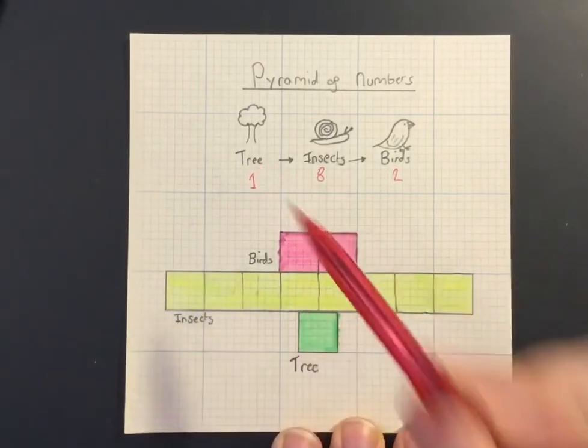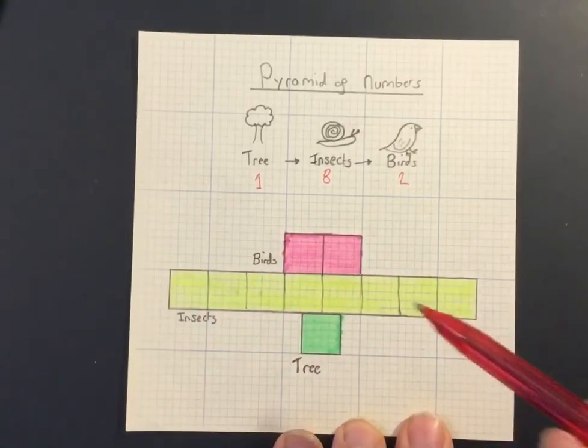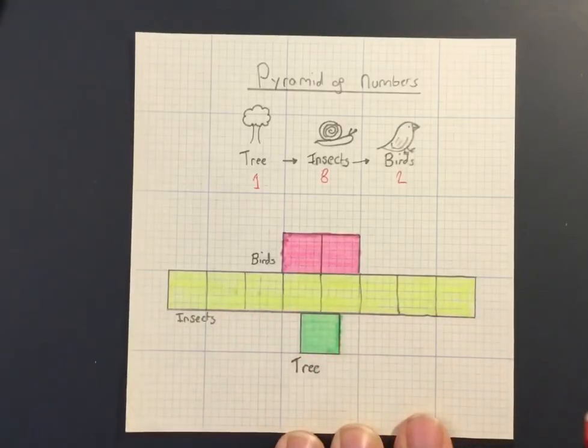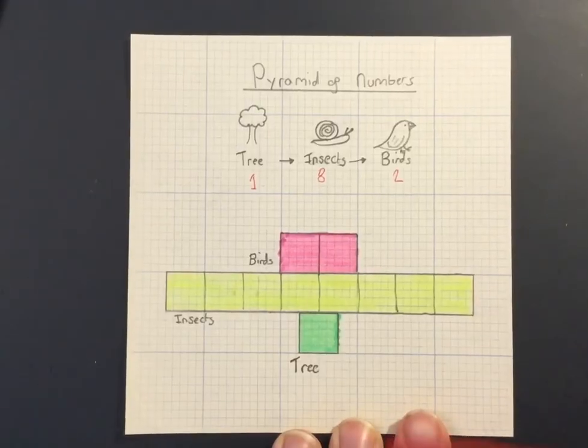It's a lot larger than the insects, but there are more insects, hence why we've got a larger bar. And then we go up another trophic level and we have the birds, and there's only two of those feeding off the insects.